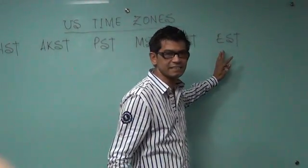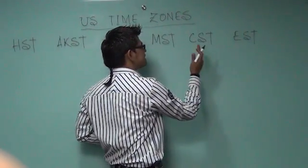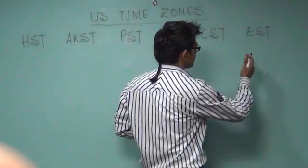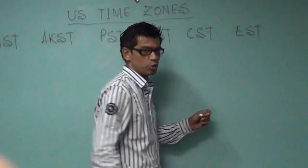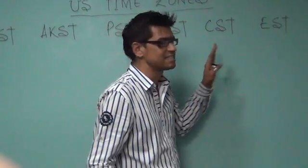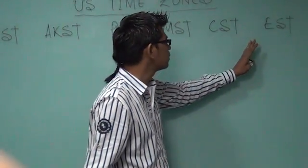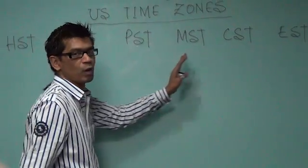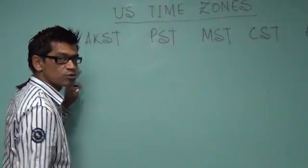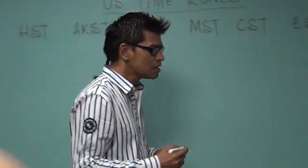Now, starting from the eastern side, the difference between each of these time zones is one hour. For example, the difference between EST and CST is one hour, CST and MST is one hour, and so on and so forth.